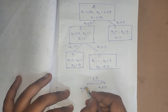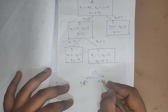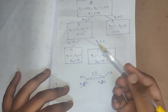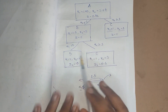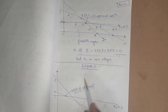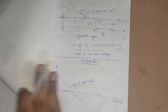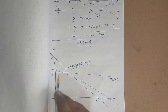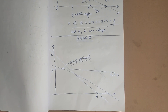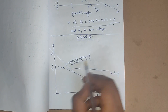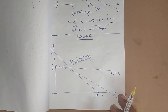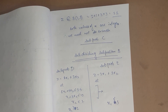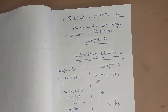For x1 = 2.5, we create two further branches: subproblem D with x1 ≤ 2, and subproblem E with x1 ≥ 3. Meanwhile, we solve subproblem C, which has the original constraints plus x2 ≥ 3. After solving, the optimal point is (1, 3), giving x1 = 1 and x2 = 3 — both integers — so we do not branch subproblem C further.